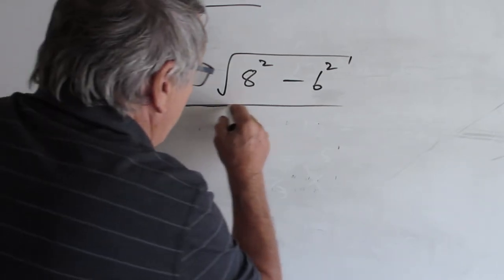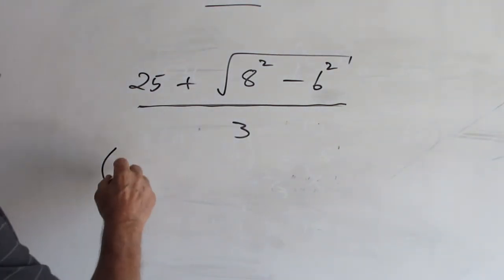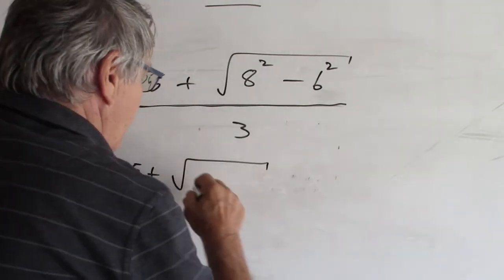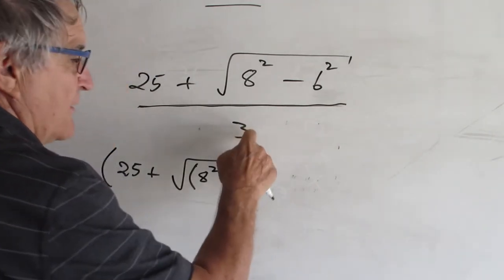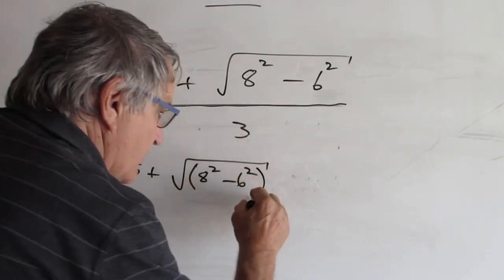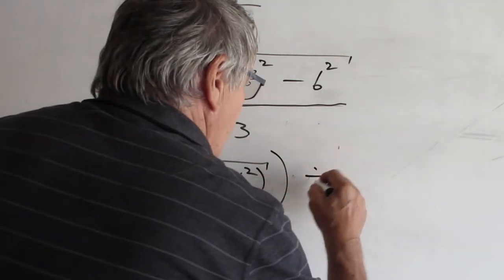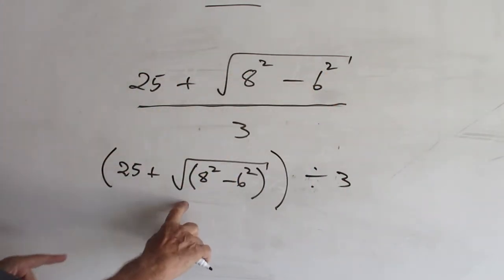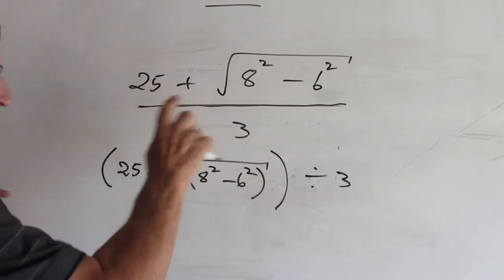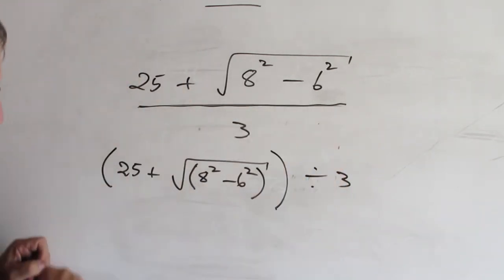But remember, this is a bracket. So if you're going to do it in one go, you've got to start with a bracket. 25 plus the square root of, and you'll have a bracket in there, 8 squared minus 6 squared. Because we've then got to divide by 3, we're going to close off that bracket. Then we're going to close off this bracket, and then we're going to divide by 3. No brackets here, but plenty of brackets here. And they're hidden brackets. The bracket that's inside that square root sign, and the bracket that occurs because of the vinculum.